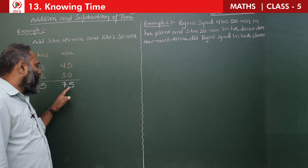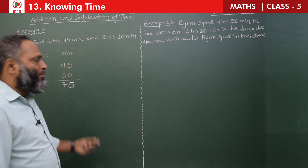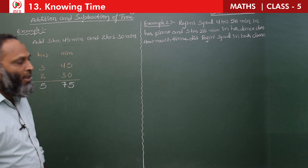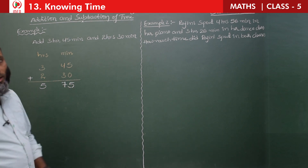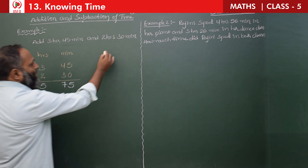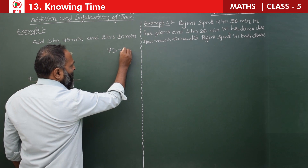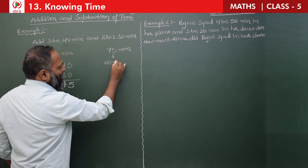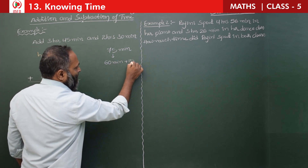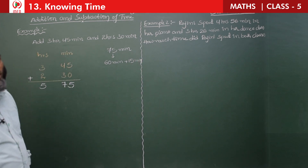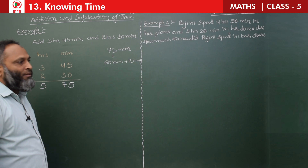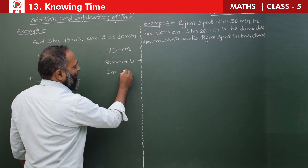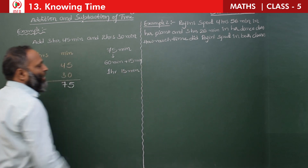If the sum of minutes is more than 60, we must convert into hours and minutes. Here we get 75 minutes. We split it as 60 minutes plus 15 minutes. 60 minutes equals 1 hour, and 15 minutes remain as is — so 1 hour and 15 minutes.